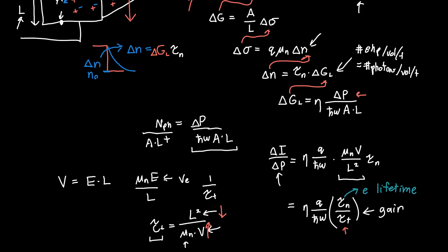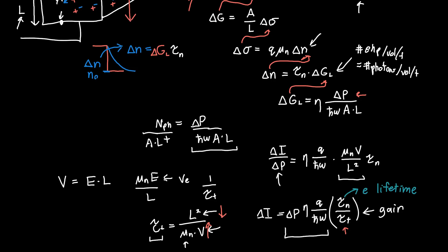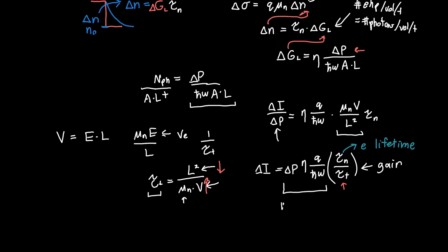This is kind of interesting. If we interpret this as a gain and let's rewrite this with delta P on the right-hand side, then this term here is actually just the number of electron-hole pairs, or it's Q times the number of electron-hole pairs generated.